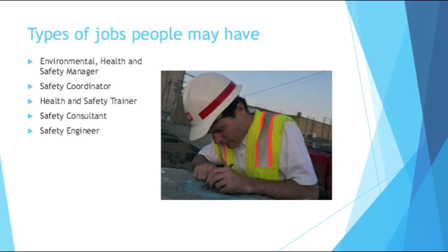If you like safety, maybe you want to do it for a living. What types of jobs are there in safety? Here are a few titles: Environmental Health and Safety Manager, Safety Coordinator, Health and Safety Trainer, Safety Consultant, and Safety Engineer. So even in the world of safety, there's all sorts of variety — whether you want to focus more on training, research, managing, or designing, you can find what caters to you best.